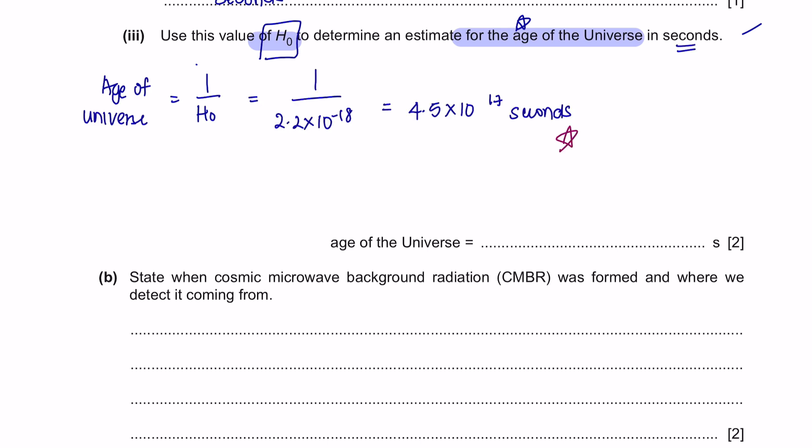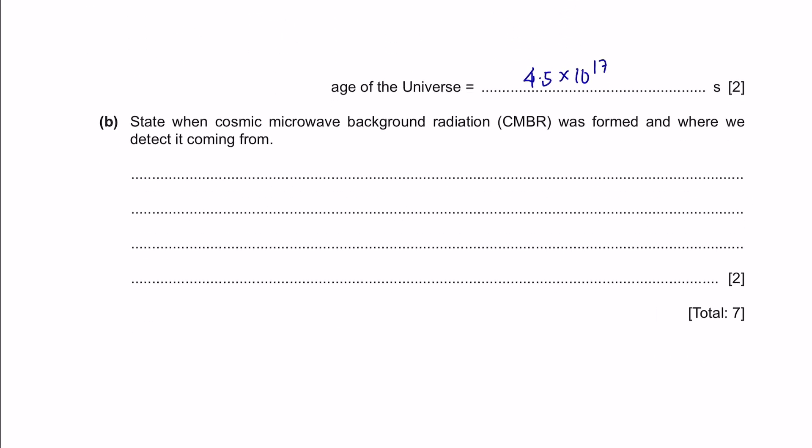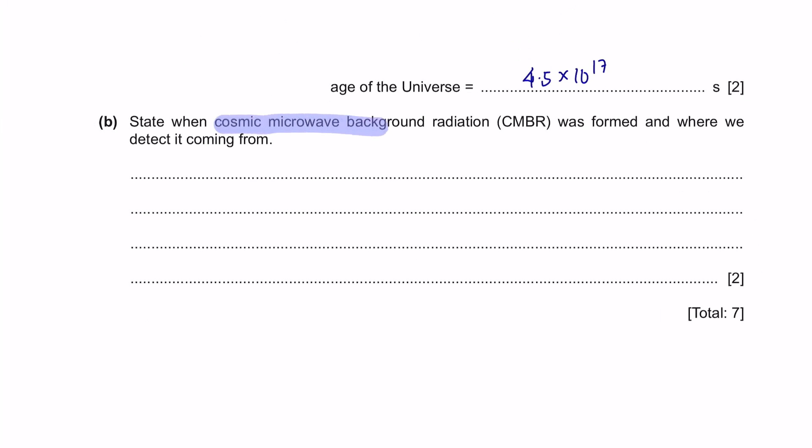Question B. State when cosmic microwave background radiation was formed and where we detect it come from. I have a video to explain all this theory. You can watch it to understand further. Cosmic microwave background radiation was formed since the Big Bang and we can detect it from all points in the space.